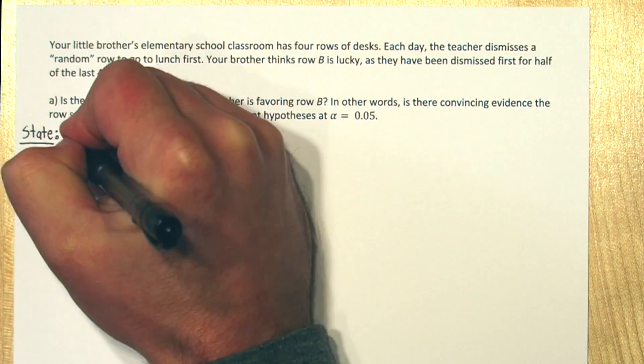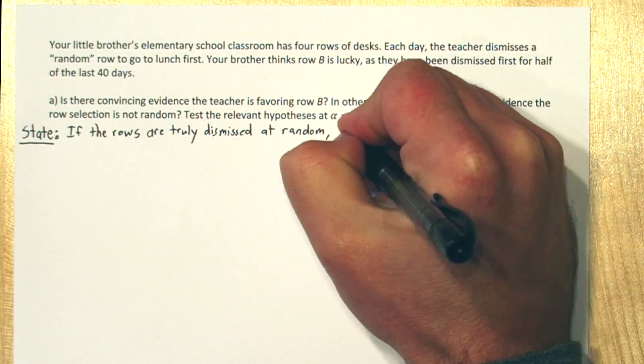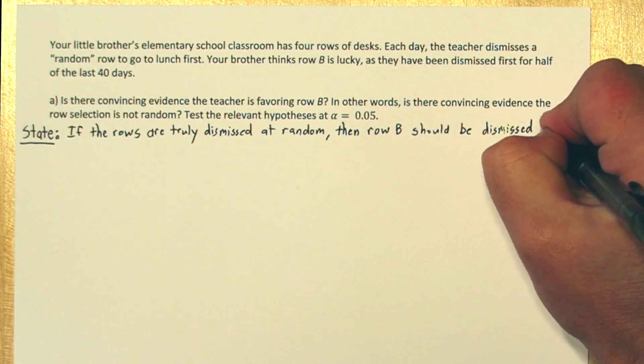We're going to use the 4-step solving process for this. So for the state step, if the rows are truly dismissed at random, then row B should be dismissed first 25% of the days.